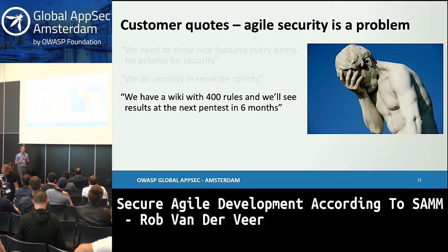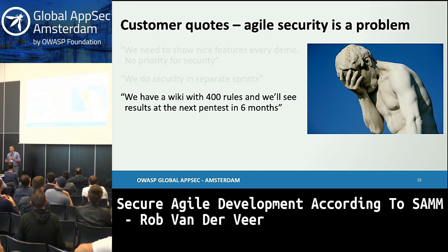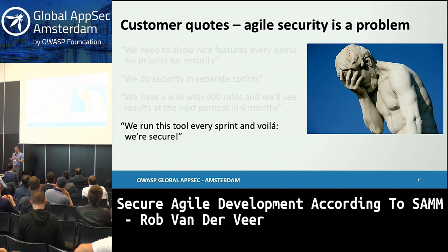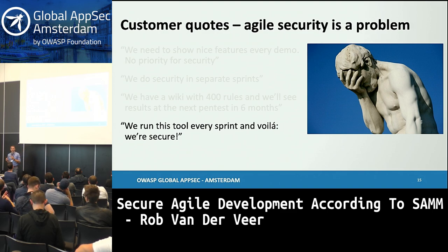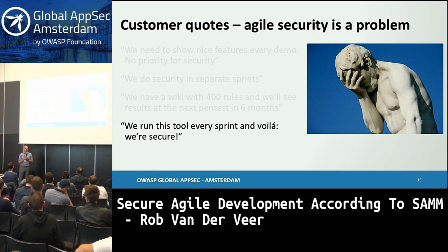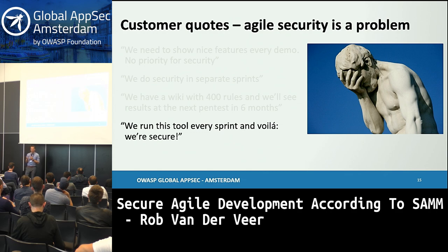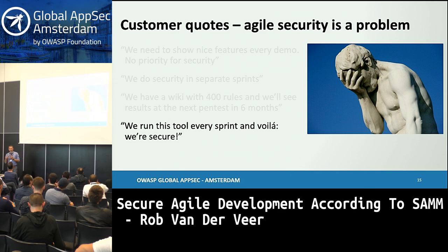There's a good way to make it happen in Agile. Also, a pen test in six months is way too long a feedback cycle — you want feedback almost every sprint. 'We run this tool every sprint and voilà, we are secure.' This is based on the idea that you have to automate your verification — that's a very good practice. But you also have to realize that some issues in software you just cannot detect using tools. You have to do manual reviews of your design and code, things that only experts can do, and you have to find a way to make them really fast.